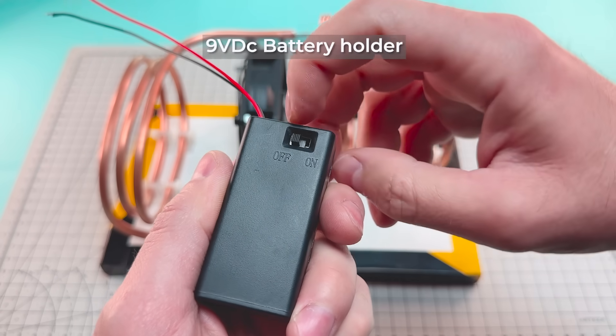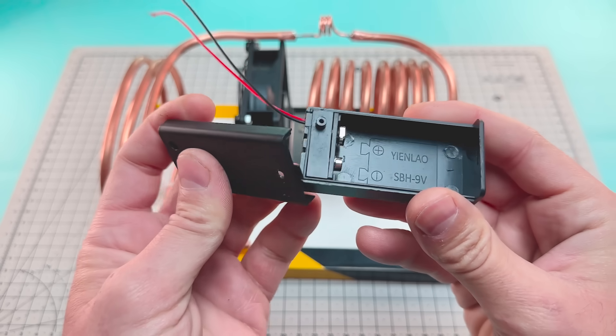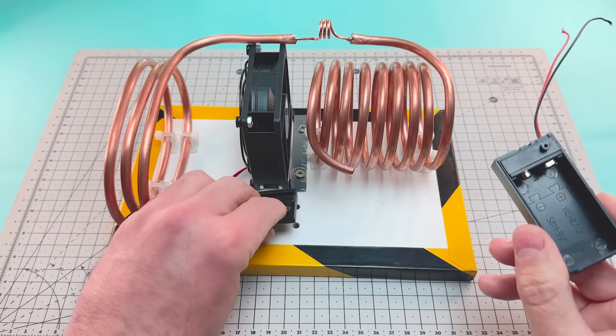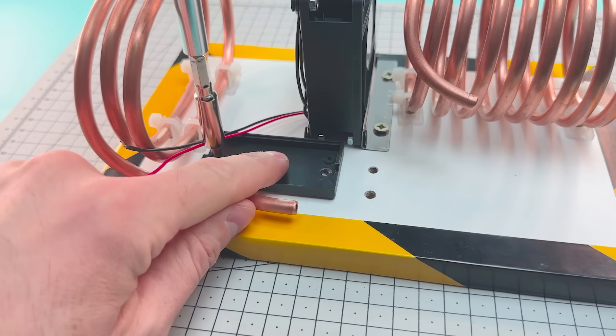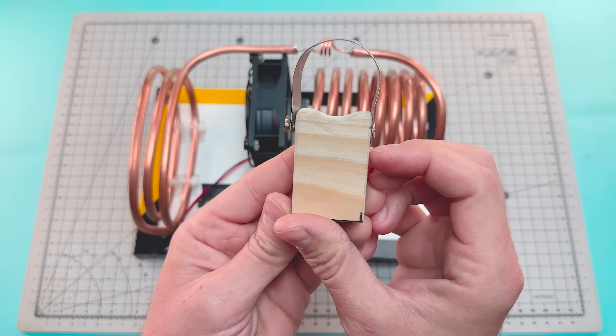Now we're going to install a small battery holder. And next to this holder, another one that will support an air pump.